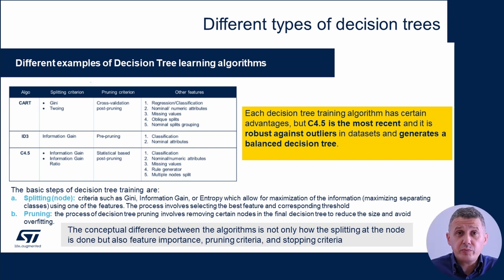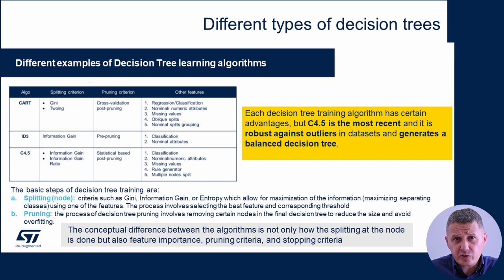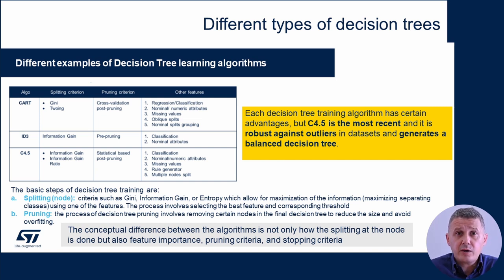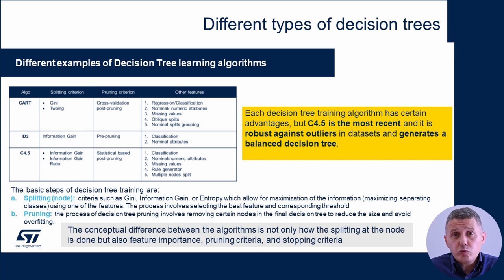A few additional points before concluding: you may find different names for decision trees in various machine learning tools and libraries. The decision tree structure and design process is the same as we have seen, but the different names refer to different algorithms used to generate the decision tree from the given dataset.